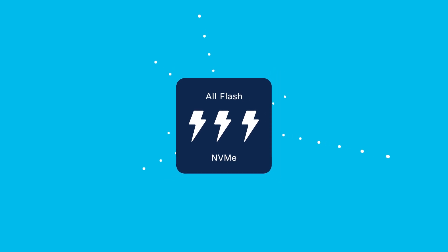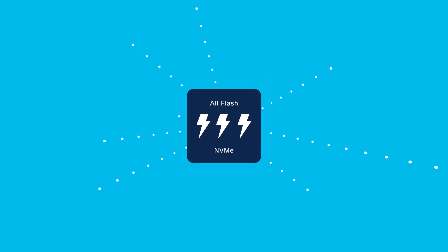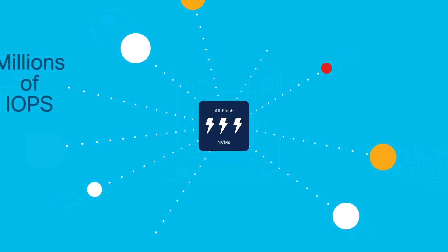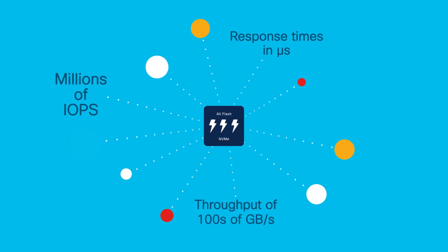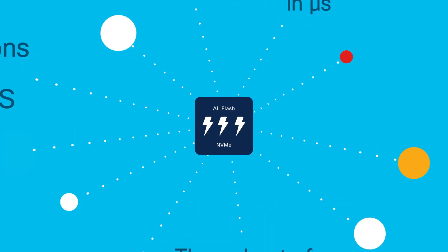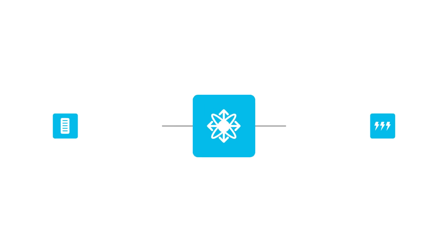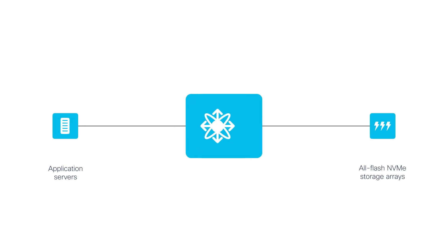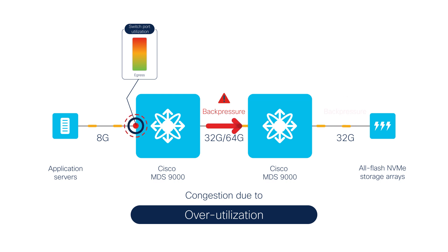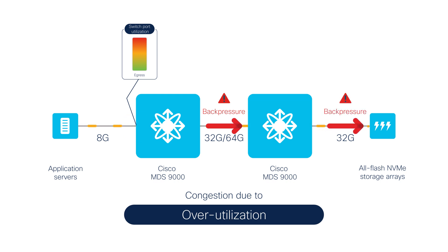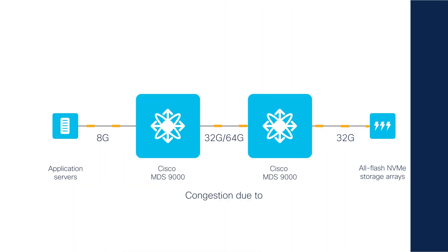NVMe-powered all-flash storage arrays can drive millions of IOPS with response times in microseconds and throughput in hundreds of gigabytes per second, but your apps may not benefit from the full potential of these ultra-fast storage arrays. Sometimes the servers are connected at slower speeds of 4, 8, or 16 gig when the 32 gig line rate response from the all-flash arrays reaches these slower links, they get over-utilized and result in a congested fabric.